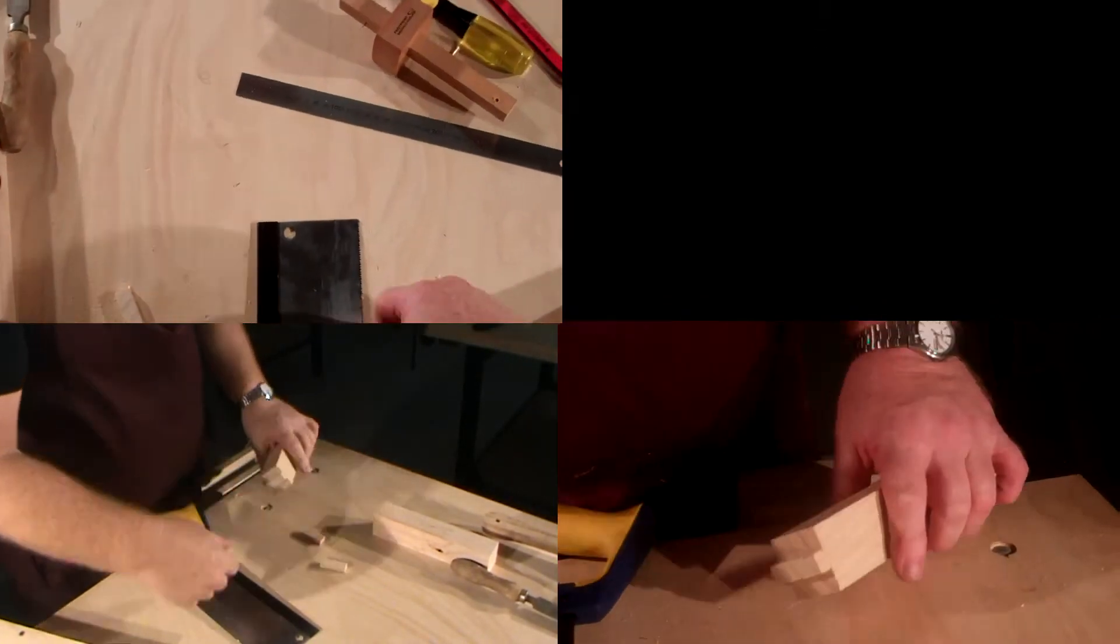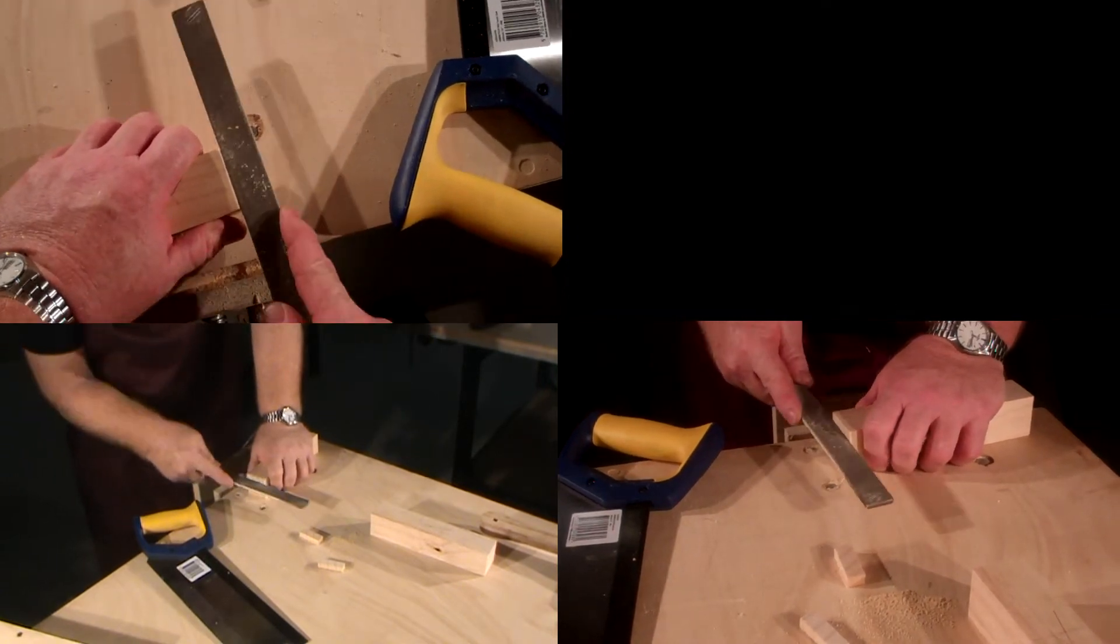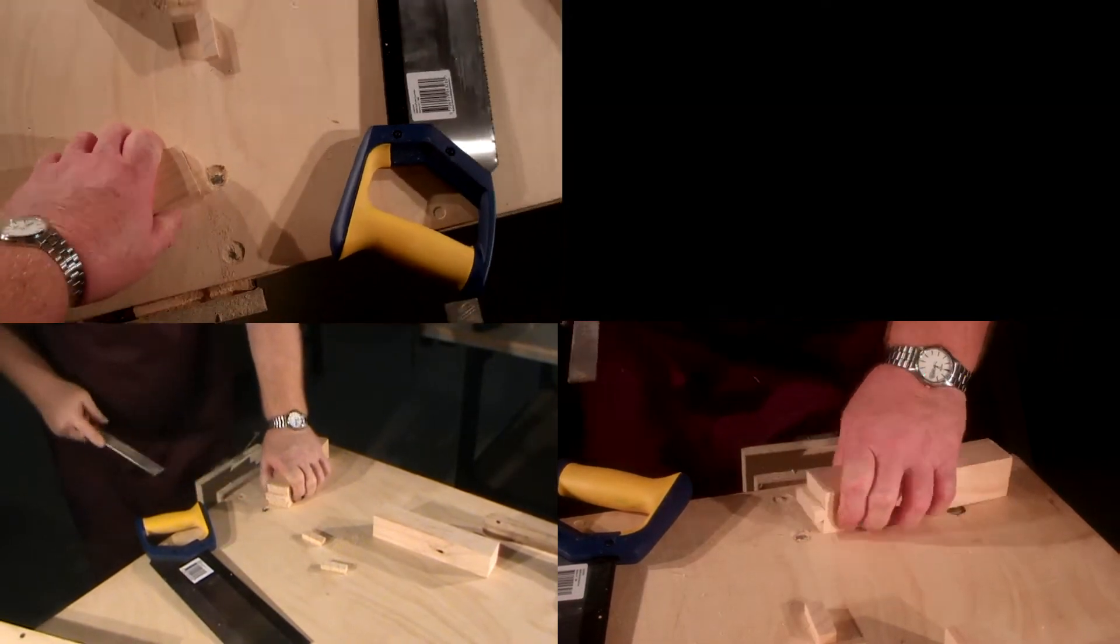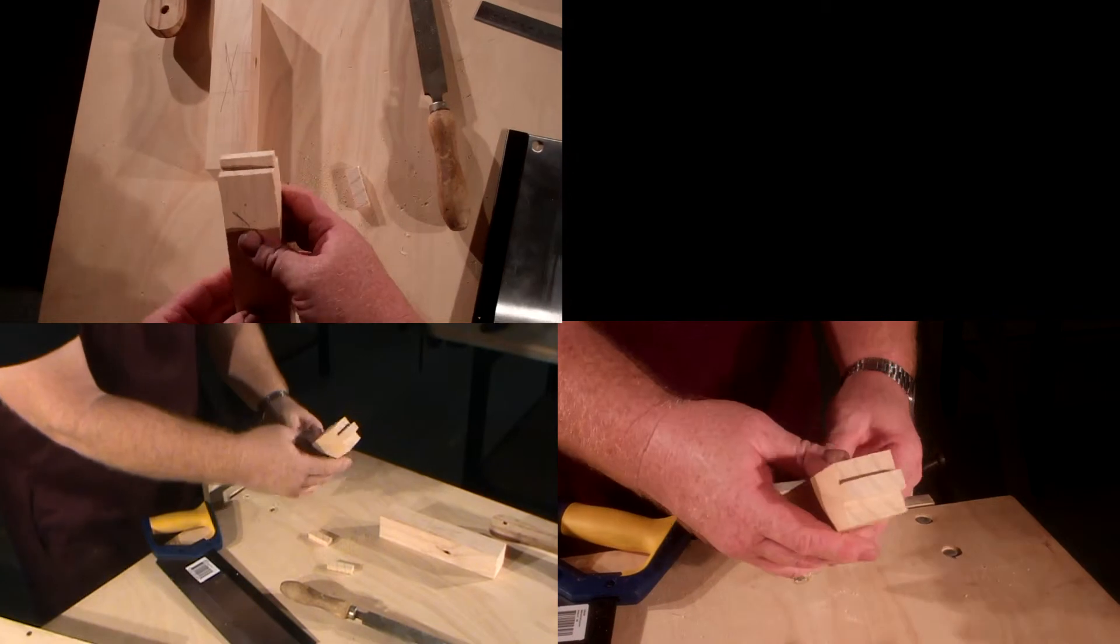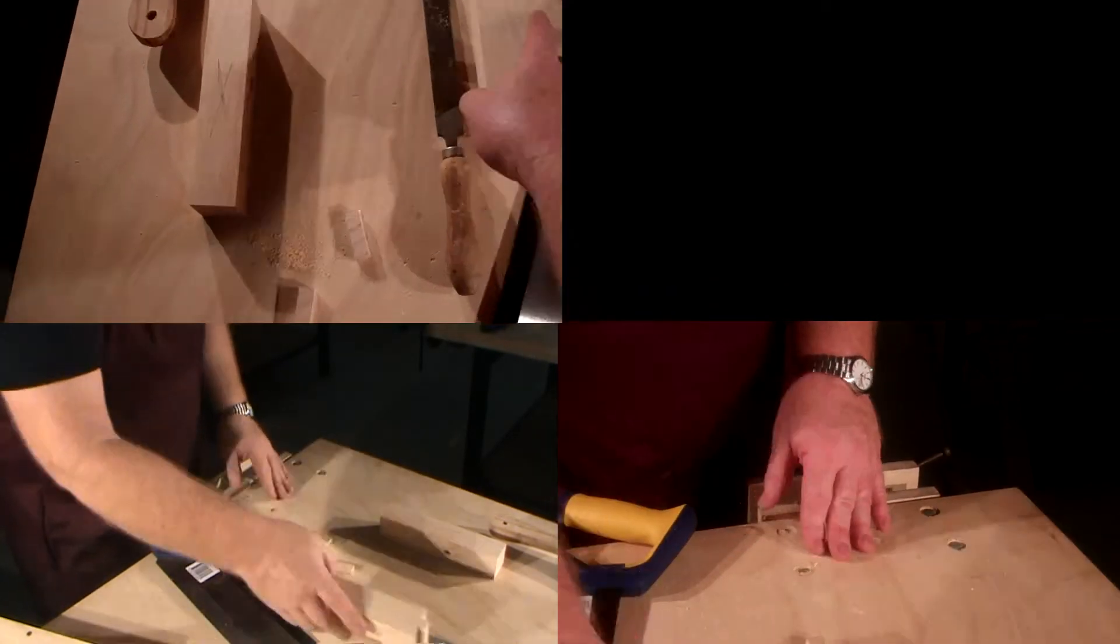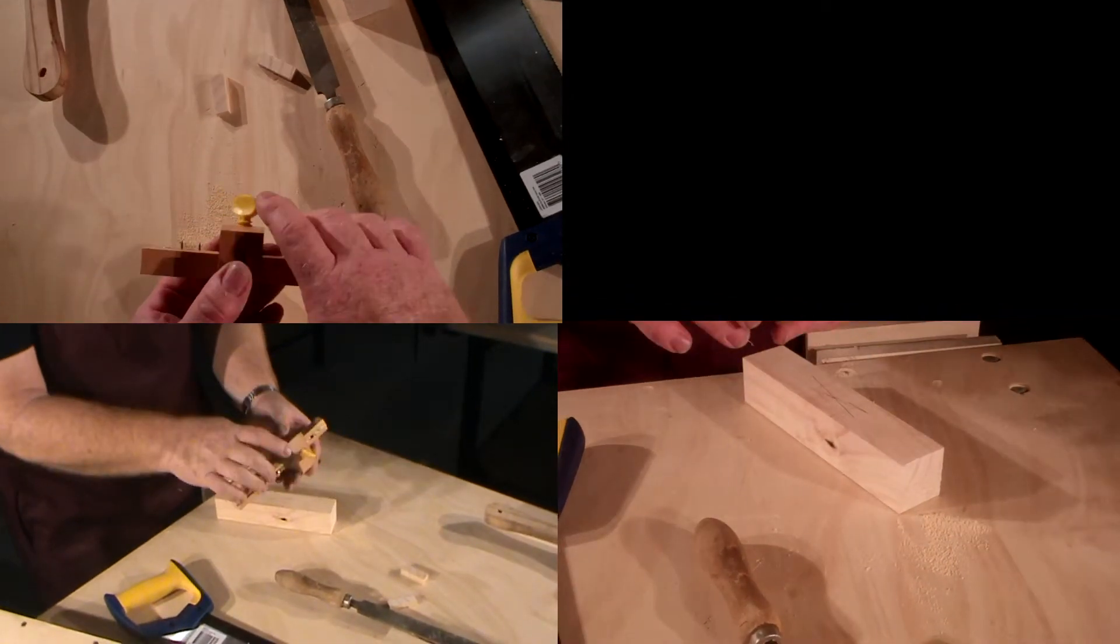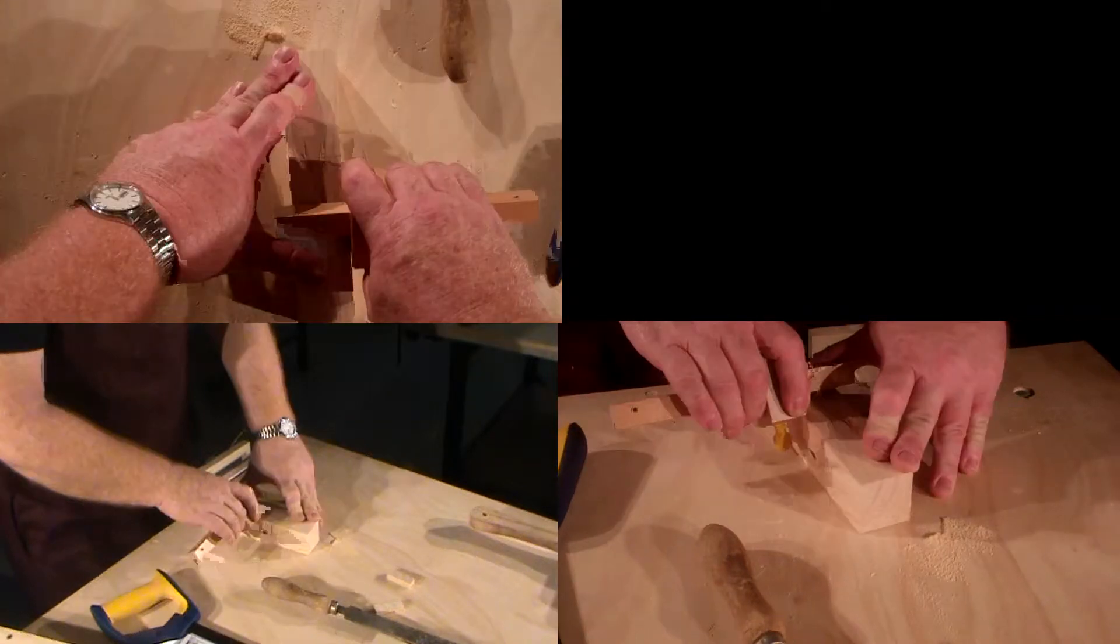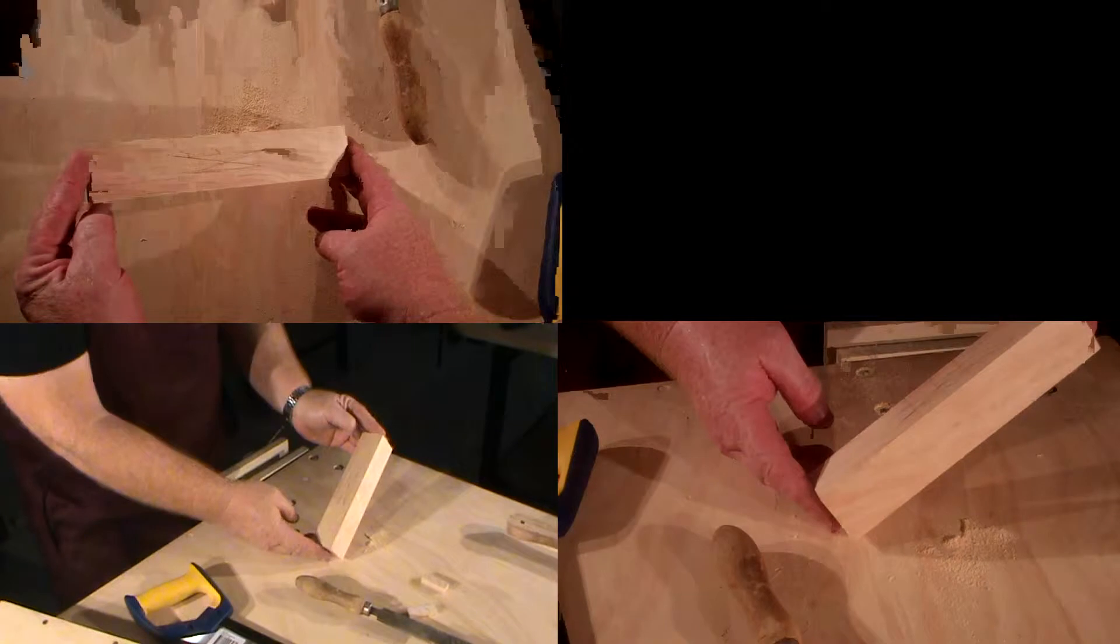So there's our tenon. We might just tidy that up a little with the file. Now we'll create our mortise. The mortise we're going to use the same marking gauge with the same settings and we'll mark through our timber like so. Set that in the vise.